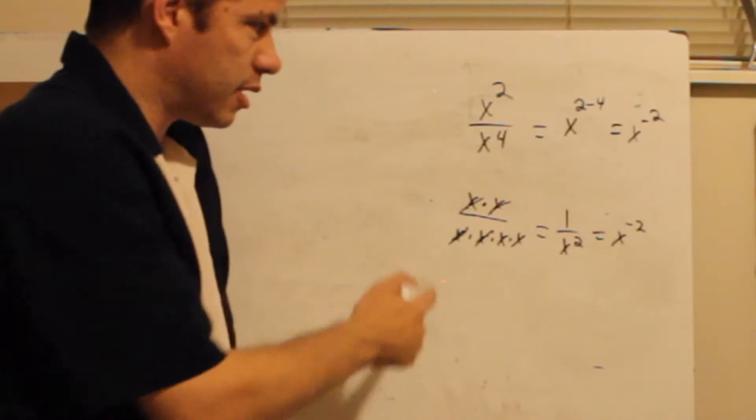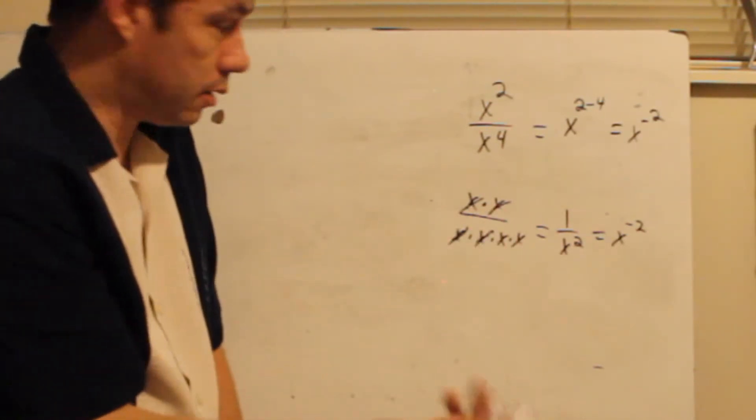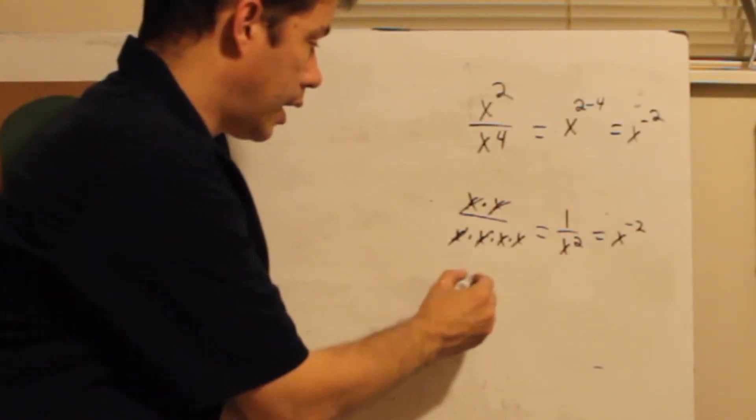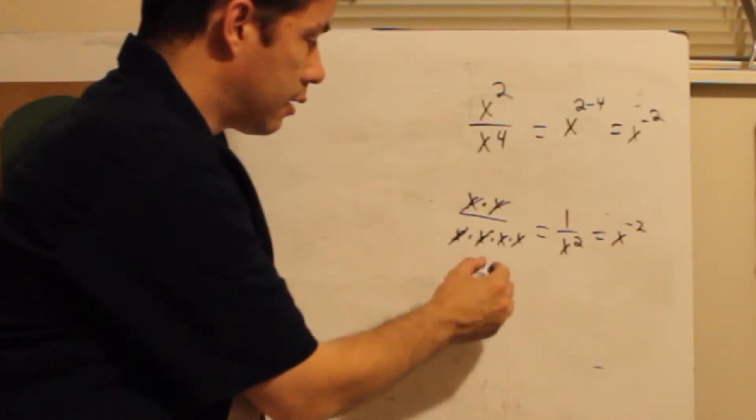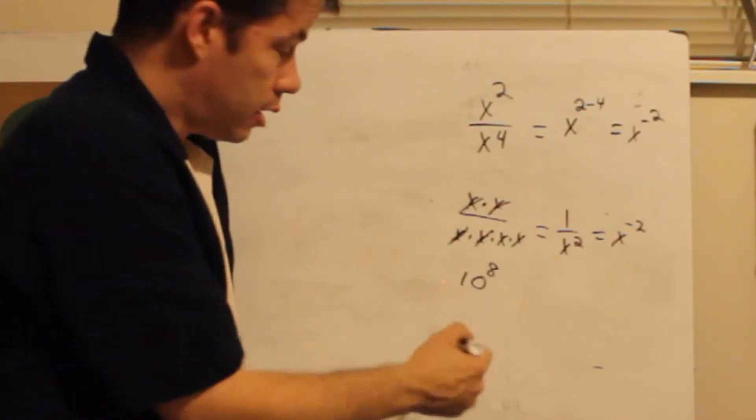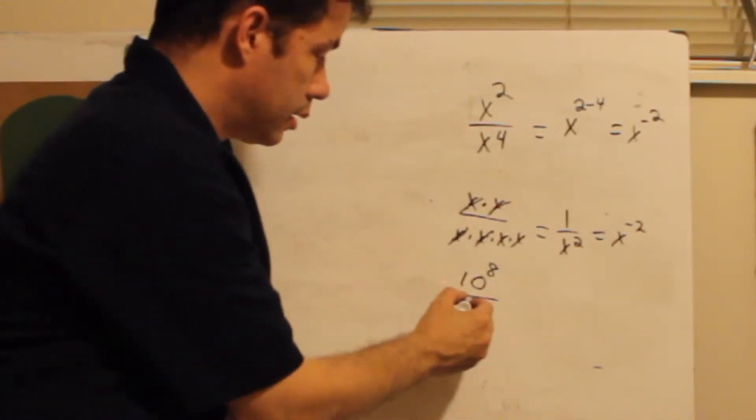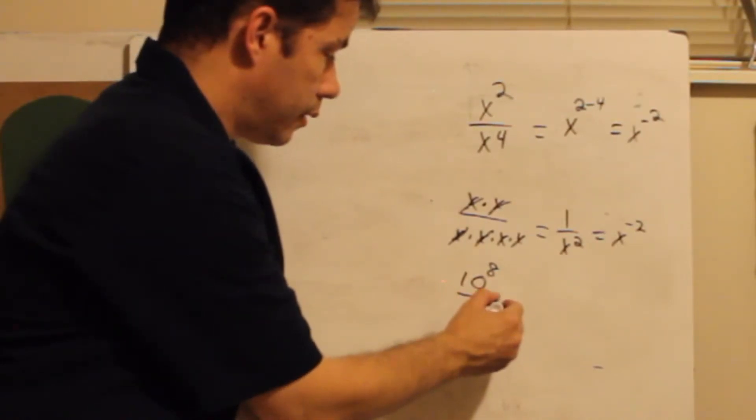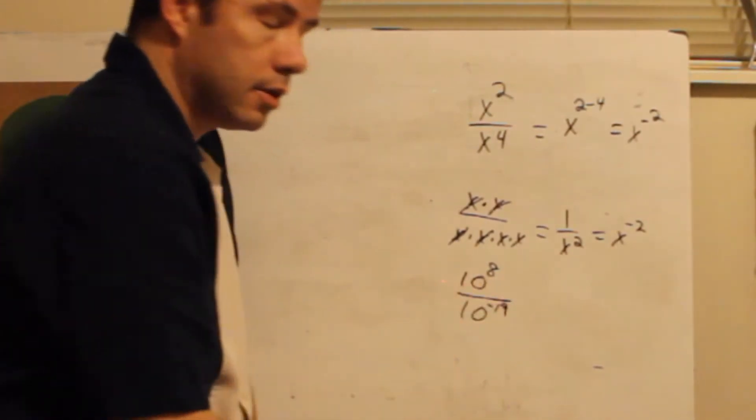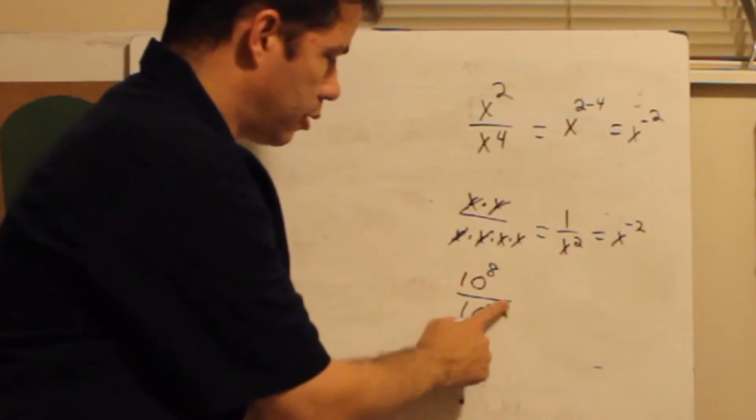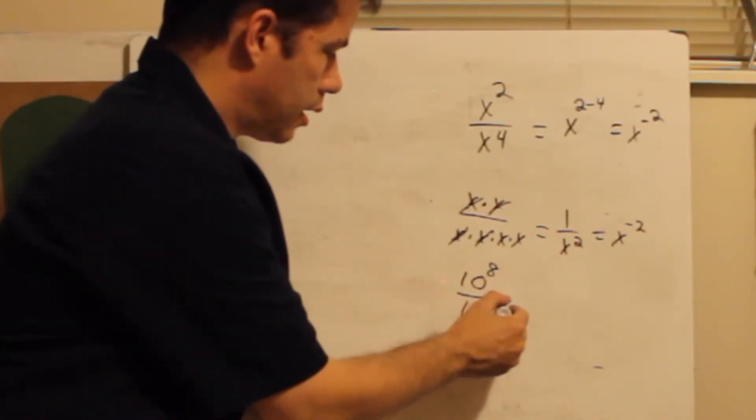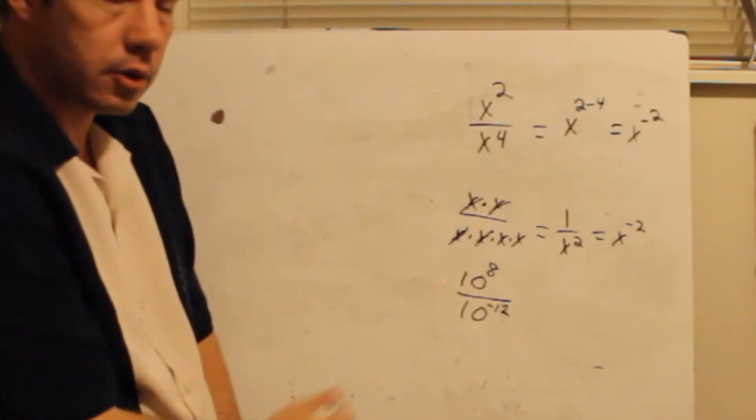So now we're going to do the same thing, but instead of x's, we're going to use 10. Powers of 10. So if I have 10 to the 8th, that's the one we're going to do, divided by 10 to the negative 19. Now let's do an easier number. Let's do 10 to the negative 12. Let's try it.